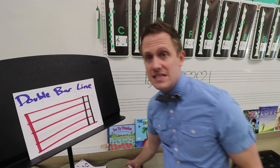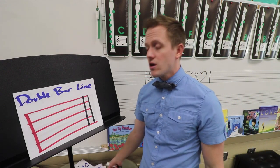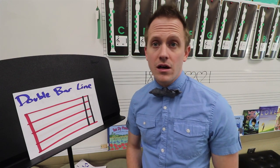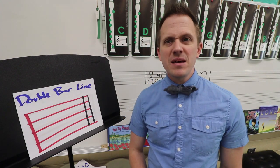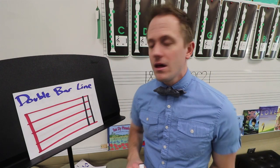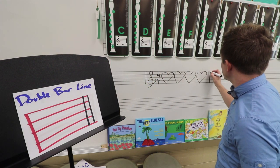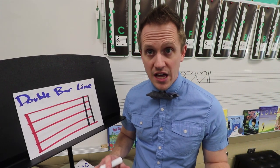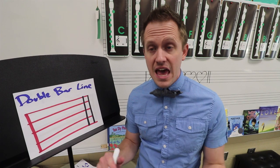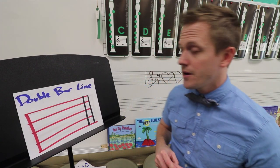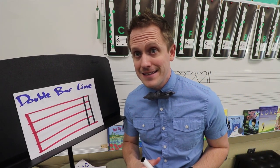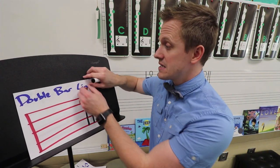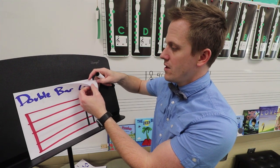Our next symbol of notation is called a double bar line. Double bar lines happen at the end of a piece — it's basically like a big giant stop sign. All you do is add a second bar line, and that way the performer knows you're done. That's a pretty easy one — just a second bar line: one, two, double bar line. It means stop.